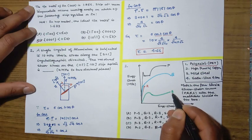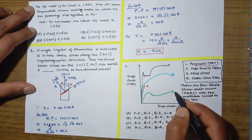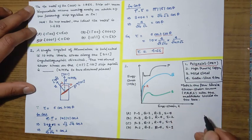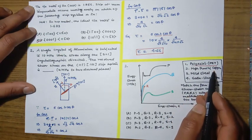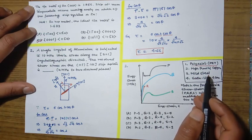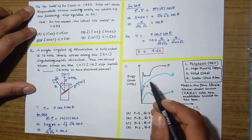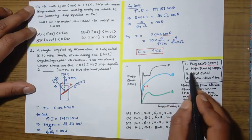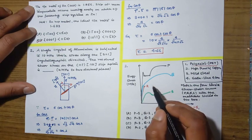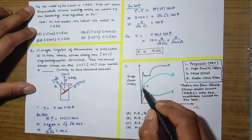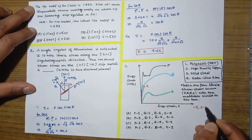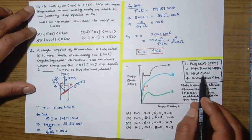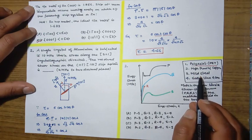So material one (polyester) matches with S. High-purity copper, being high purity, will undergo strain hardening after the elastic limit (L point), with no upper yield point. The curve showing only strain hardening after elastic deformation is Q, so material two (copper) matches with Q. Mild steel, due to the presence of low carbon and formation of Cottrell atmosphere, exhibits the upper/lower yield point phenomenon.